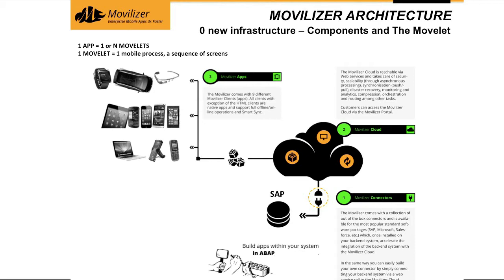Before we start creating movelets in ABAP, we need to check a few things. First, we have to ensure that the Movilizer connector is properly installed. Then we have to see if the connector can connect with the Movilizer cloud. And finally, we are going to download the Movilizer client.